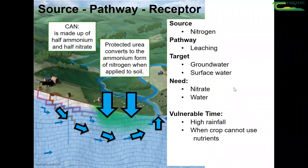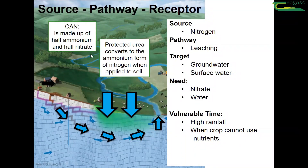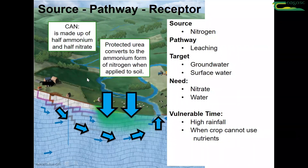Where does the nitrate come from? If we take two examples — take normal CAN, this is made up of half ammonium and half nitrate. Nitrate is the form of nitrogen that can be readily leached through the soil, whereas ammonium sits there and is more stable.